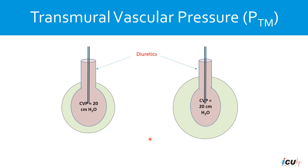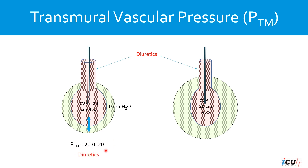It is similar to transpulmonary pressure, but here we are applying it to the vessels. Consider two patients who both have a CVP of 20 — the clinical decision would be to give diuretics since the CVP is elevated. However, this pressure is only a measurement of intraluminal pressure. In the first patient, if the surrounding pressure is zero, then the transmural pressure is 20 minus 0, which equals 20. In that case, you would give this patient a diuretic.